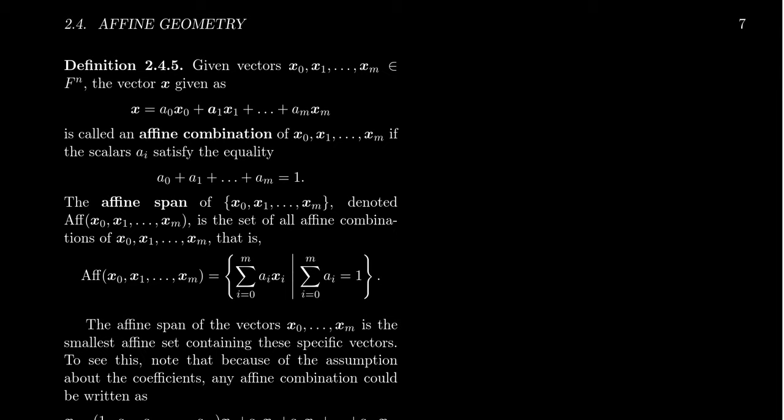So by an affine combination, what I mean is the following. We have a set of vectors x₀, x₁, up to xₘ, and they all belong inside of Fⁿ right here. And we say that x is an affine combination of the other x's if x is equal to a₀x₀, where a₀ is a scalar, plus a₁x₁, which of course a₁ is also a scalar, all the way up to aₘxₘ like so.